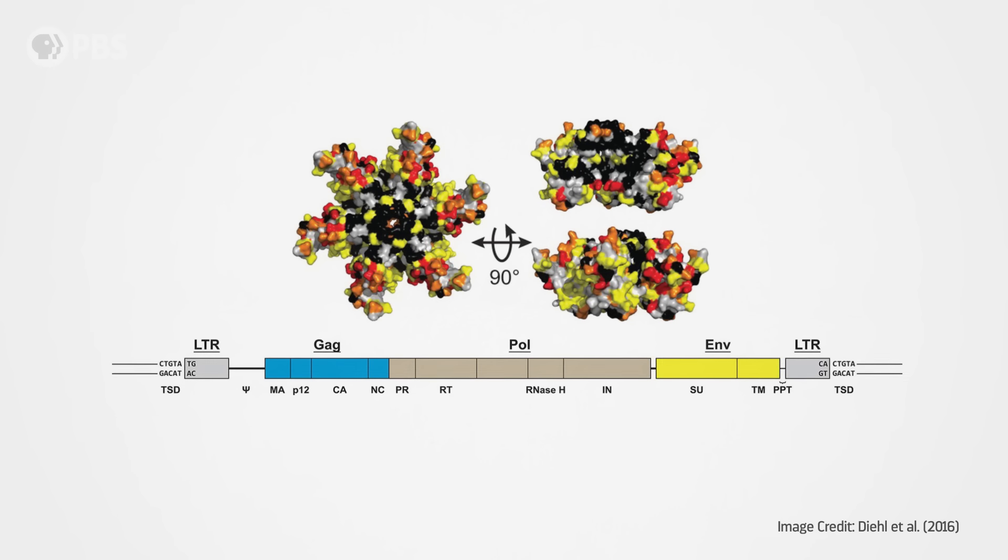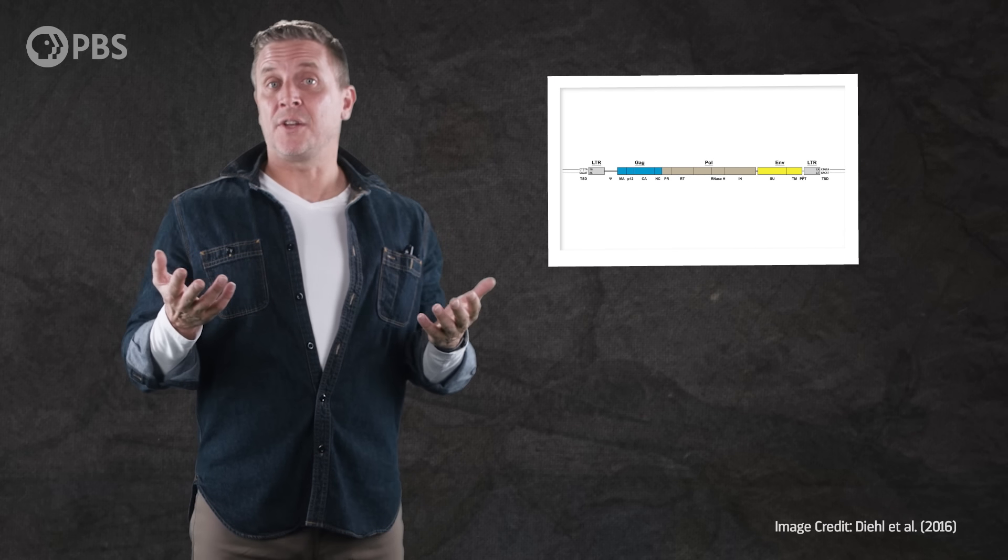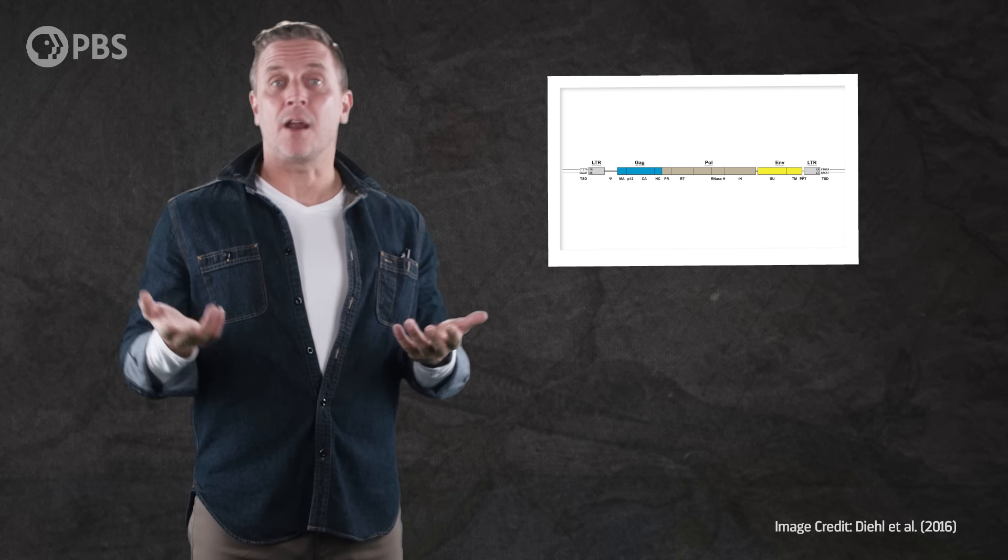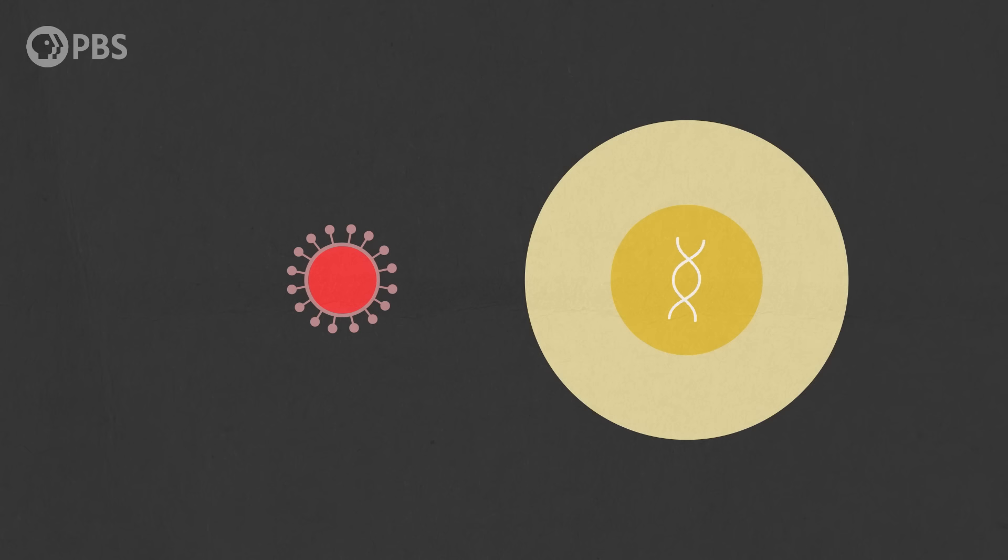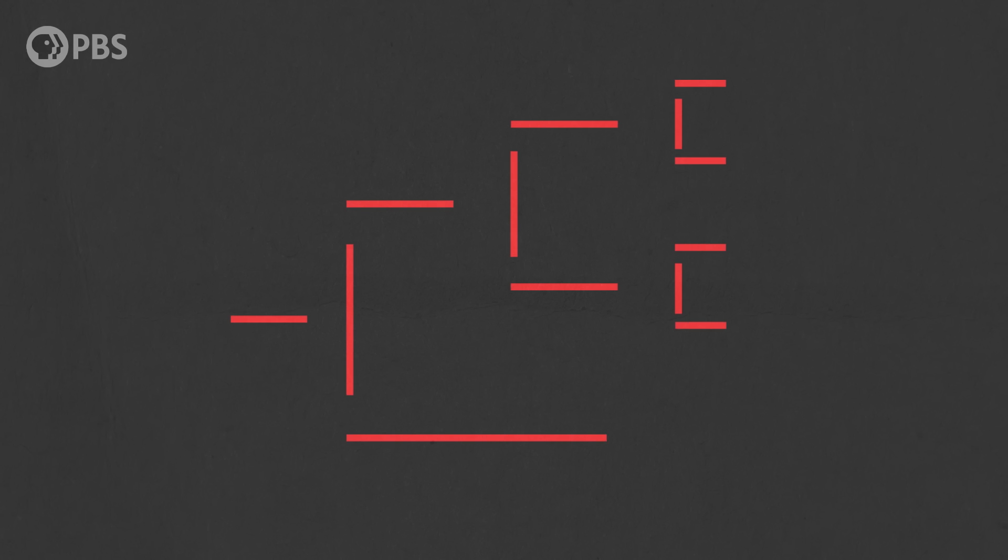So those are some of the things that we can figure out about this ancient pandemic. But there are other things that we just can't because the fossil record of this virus is incomplete. After all, there are probably species that lost their sequences of ERV-FC over time. And others were probably infected, but the virus didn't embed itself in their DNA successfully. And some lineages that might have carried the viral fossil have just gone extinct. So we're missing pieces of the puzzle, which makes some of the details of the virus' spread a mystery.